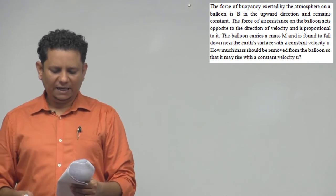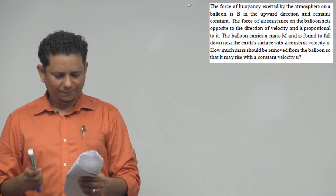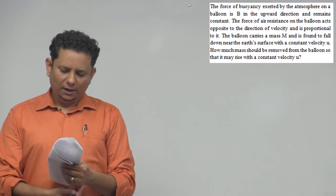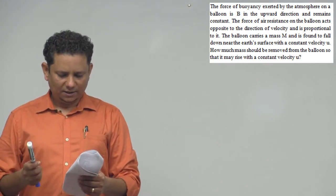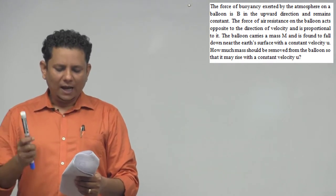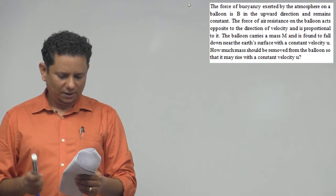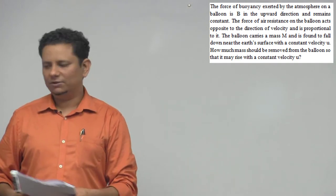The balloon carries a mass capital M and is found to fall down near the earth's surface with a constant velocity U. How much mass should be removed from the balloon so that it may rise with a constant velocity V?